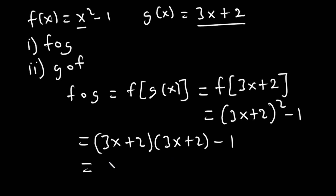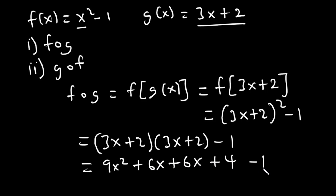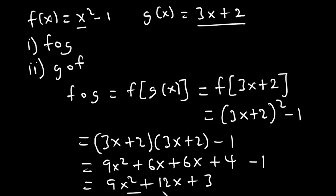Expanding (3x + 2)²: 3x times 3x is 9x², 3x times 2 is 6x, 2 times 3x is 6x, and 2 times 2 is 4, minus 1. So we have 9x² + 6x + 6x = 9x² + 12x, and 4 - 1 = 3. So f(g(x)) = 9x² + 12x + 3.